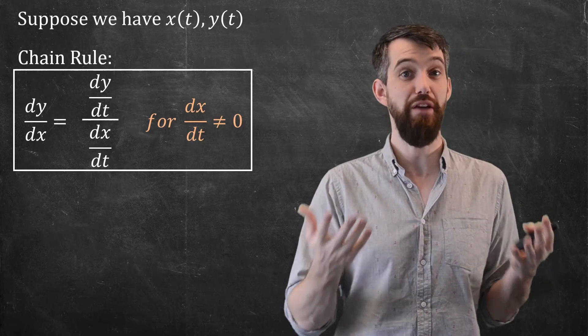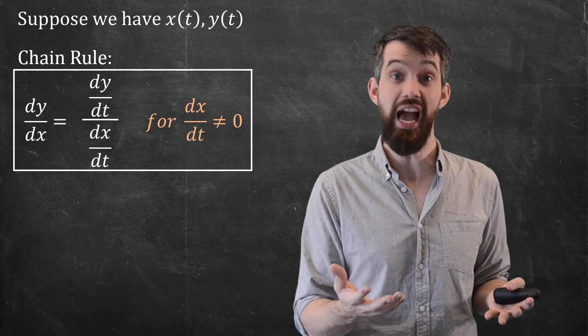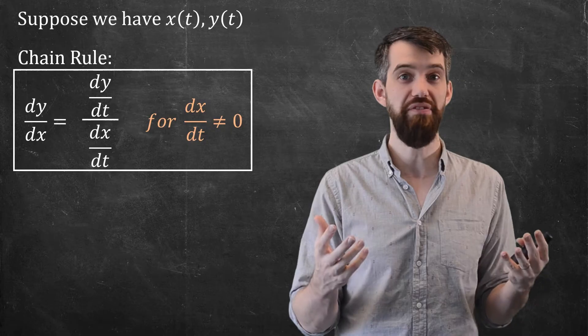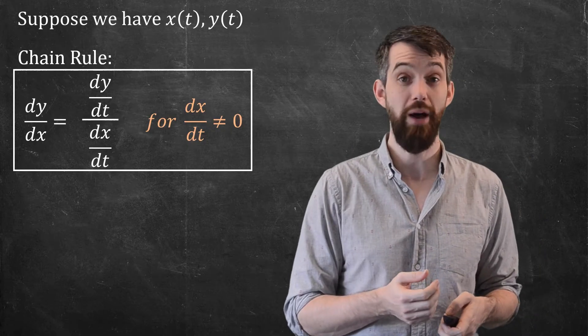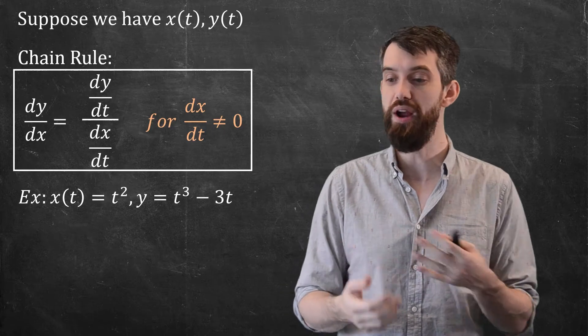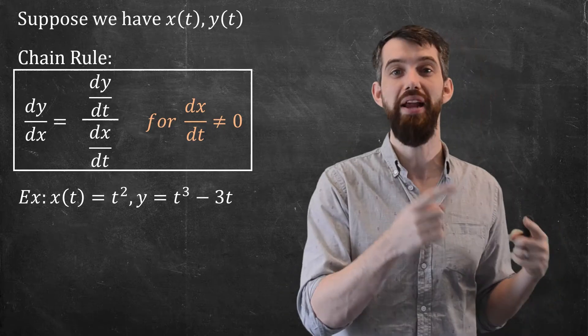So this gives me a formula to compute dy/dx, which is the slope of the tangent line. If I know my x(t) and my y(t), I take their derivatives and take a quotient. So for example, in the curves that we were studying before, this x(t) = t², and this y = t³ - 3t.